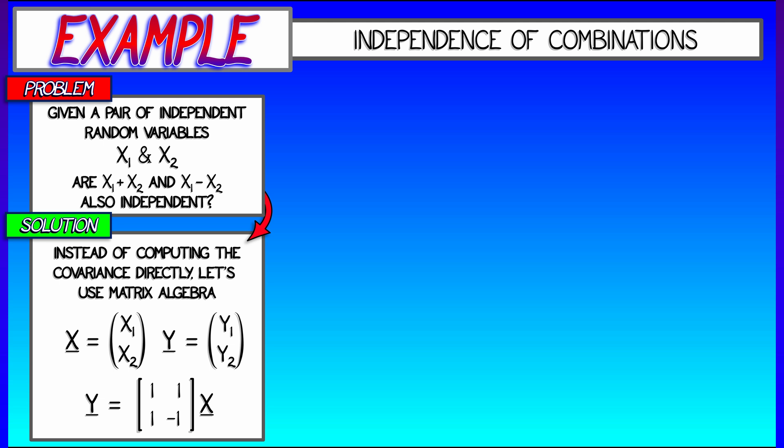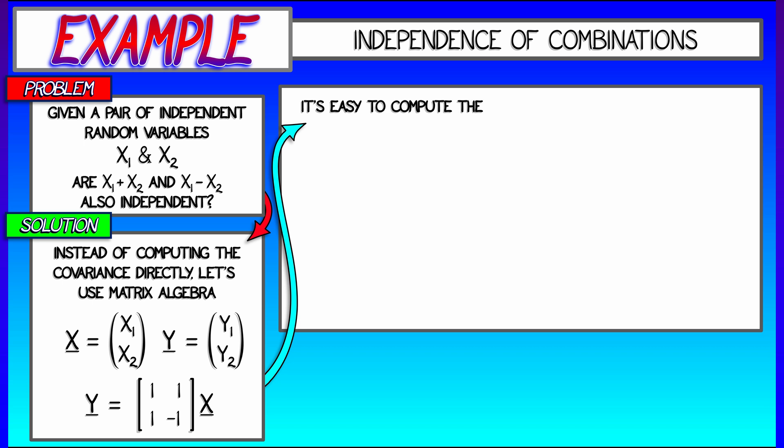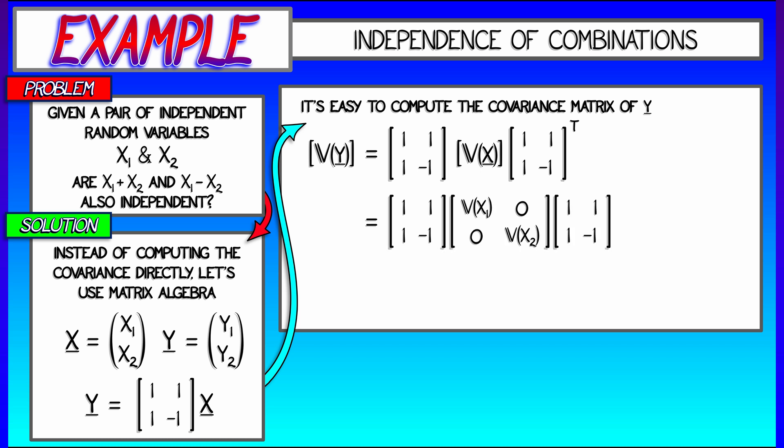Now that we've written it that way, it becomes very simple to compute the covariance matrix associated to y. Now, how do we do that? Well, according to the formula that we just went over, the covariance matrix of y is this matrix A times the covariance matrix of x times this matrix transpose. But that's the same matrix.